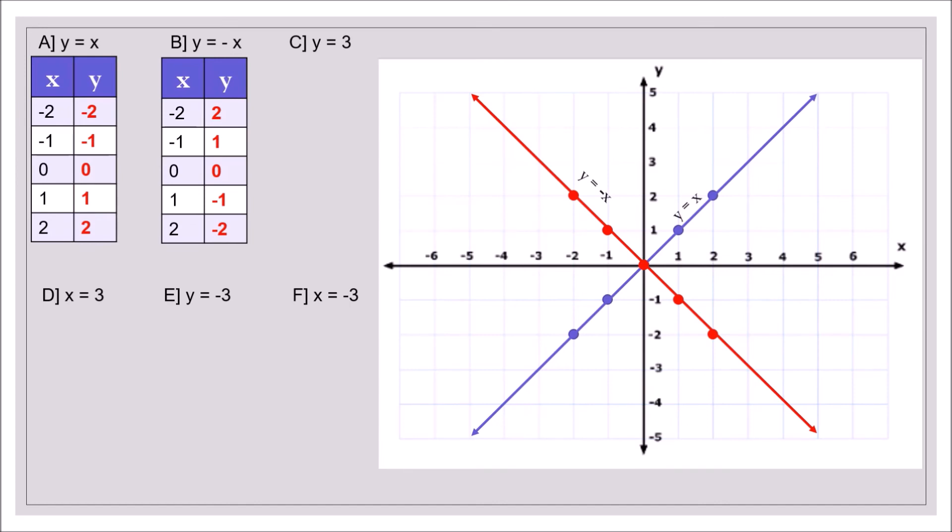Next equation, y is equal to 3. This is telling us that y is always 3 for any value of x. So when x is negative 2, y is 3. When x is negative 1, y is still 3. When x is 0, still y is 3. So this will be the horizontal line that goes through 3 of y axis. And this is y equals 3.